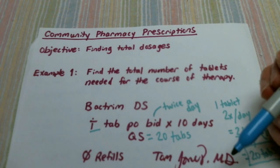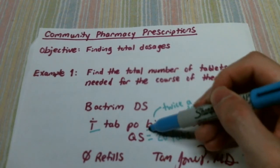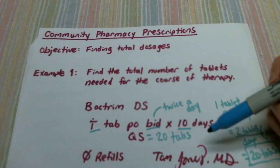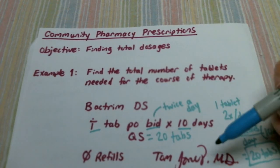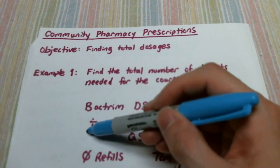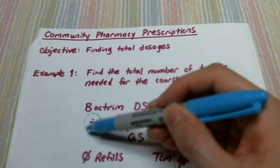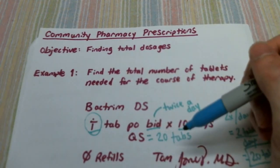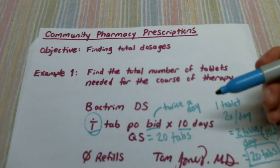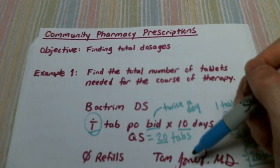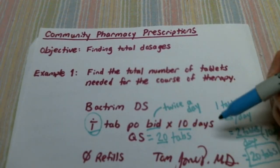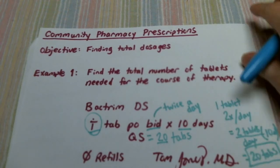Now it's easy to get mixed up when you see the BID and the ten days. You automatically want to multiply that and say oh I need twenty tablets, but don't forget you have a multiplier out here as well. Had this said two tablets twice a day, you would have had to multiply this twenty by two and you would have gotten forty tablets that you need to dispense.